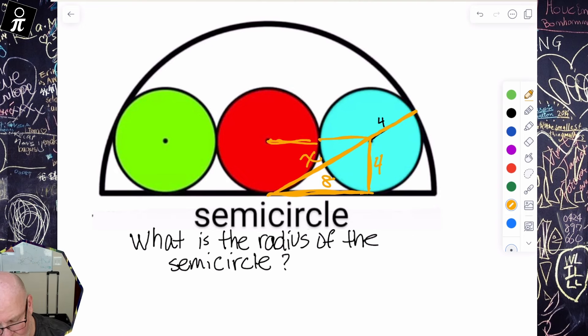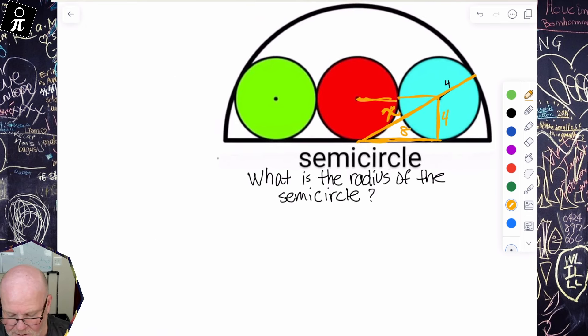So now I can do a little Pythagorean theorem to get the value of X, which is not the entire radius of the semicircle, but it's going to help us there. So let's do it.